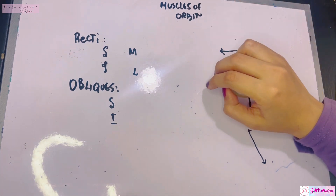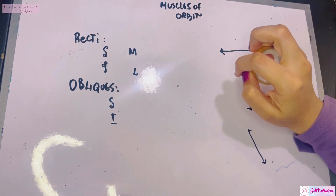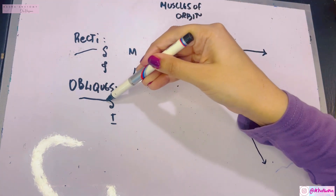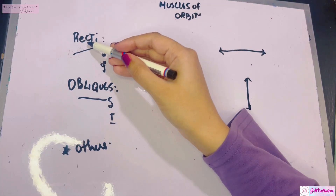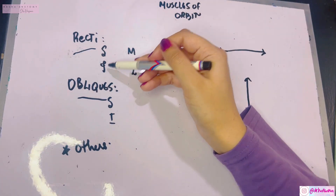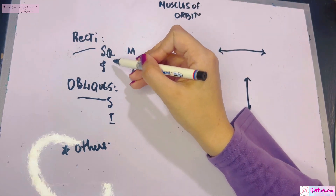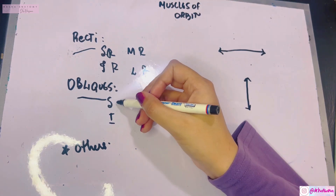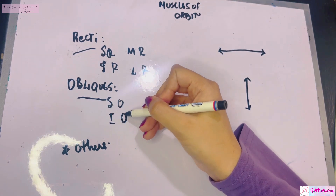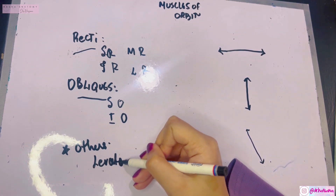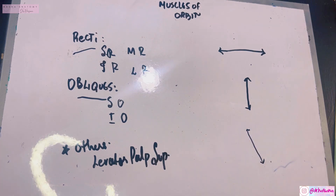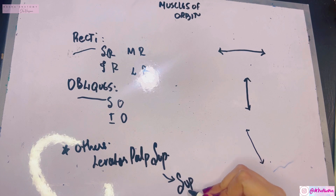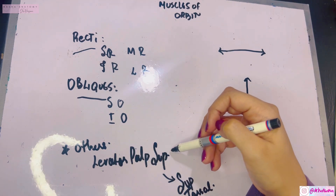The voluntary muscles are divided broadly into three categories: the first are the recti, then the obliques, and then there is an 'others' category. The recti include superior rectus, inferior rectus, medial rectus, and lateral rectus. The obliques are the superior oblique and inferior oblique. In the 'others' category, we have the levator palpebrae superioris, which has a role in involuntary movements via its superior tarsal part and is attached to the upper eyelid.